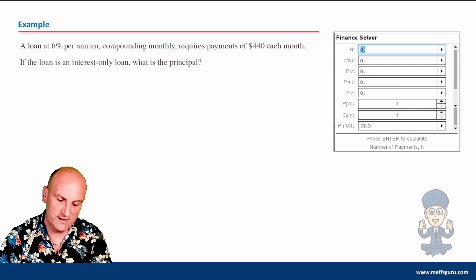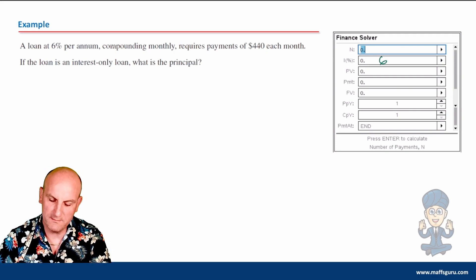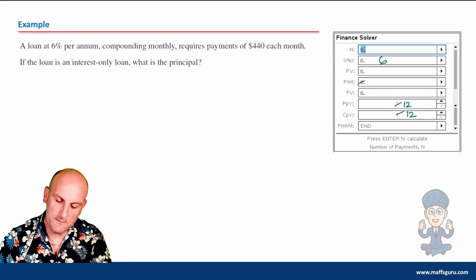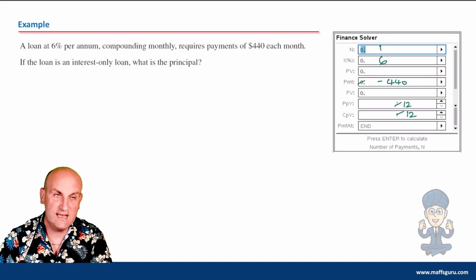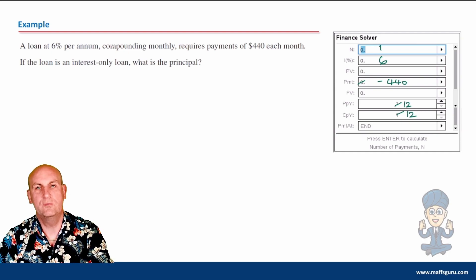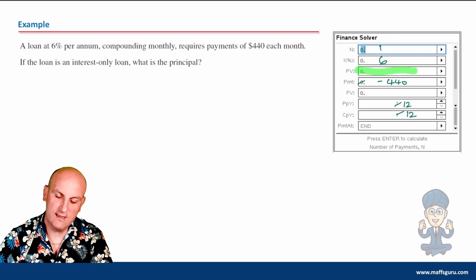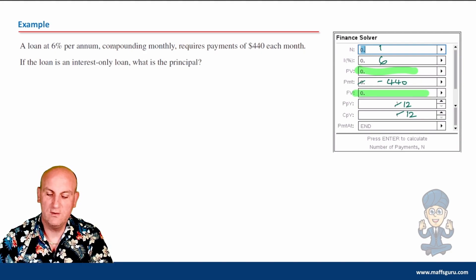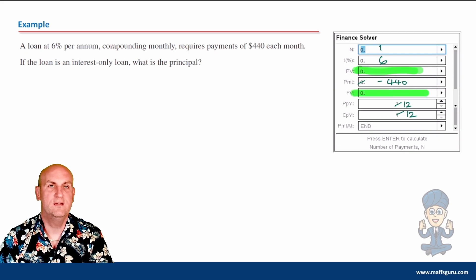A loan of 6% per annum compounding monthly requires payments of $440 each month. Let me fill in my financial solver - I'm trying to trick you here. Interest rate is 6%, compounding monthly, PPY and CPY is 12. Payments of $440, so minus $440 each month. The loan is interest-only. I can make n equals 1. What is the principal? Hold on, I don't have enough information.